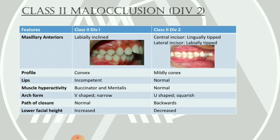Lips are incompetent in Division 1, giving rise to the lip trap phenomenon, whereas in Division 2 the lips are normal. Regarding muscle hyperactivity: buccinator and mentalis muscle hyperactivity are present in Division 1, whereas no such hyperactivity exists in Division 2. Regarding arch form: in Division 1 the maxillary arch is narrow and V-shaped due to unrestrained buccinator activity, whereas in Division 2 the arch form is U-shaped and squarish. Path of closure is normal in Division 1, but slightly backwards in Division 2.